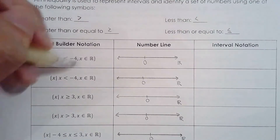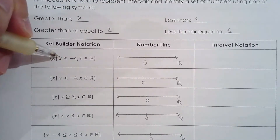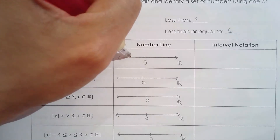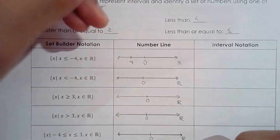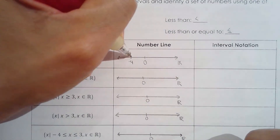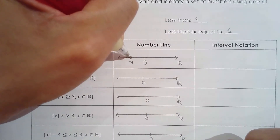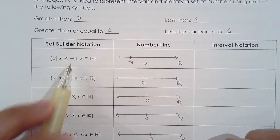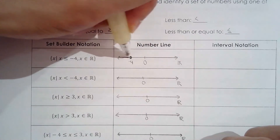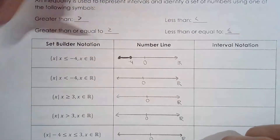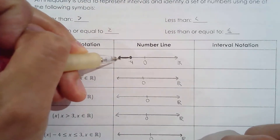So set builder notation says x is less than or equal to negative 4. If you use a number line, it's going to look like this: for less than or equal to negative 4, I'm going to do a closed circle at negative 4 because it's inclusive of negative 4. Then you highlight anything that's less than negative 4 as well.